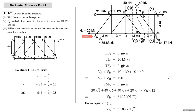The values of reactions are marked on the truss with correct directions. Now we identify zero force members. At joint C, the FBD is in the shape of letter T, so by Note Number Three, member CD is a zero force member.